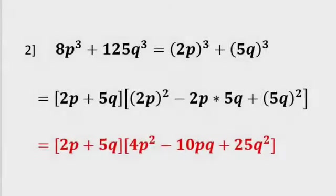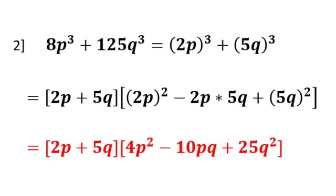The second example: 8p³ + 125q³. What is the cube root of 8p³? Cube root of 8 is 2, cube root of p³ is p. So it becomes (2p)³. Plus 125q³: cube root of 125 is 5, cube root of q³ is q. So it becomes (5q)³.